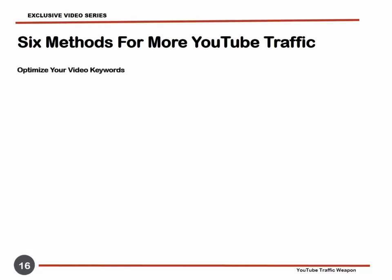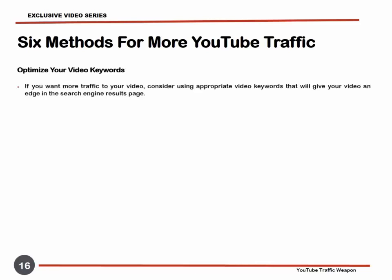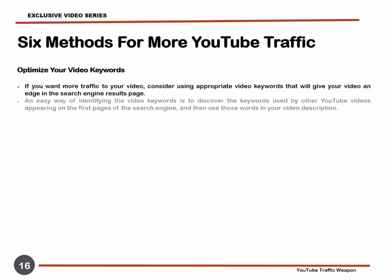Optimize Your Video Keywords. Although it pays to have a good YouTube ranking, it is more rewarding if the classification extends to Google and search engine searches. It is obvious that many websites' traffic comes from search engines like Google, which create page rankings dependent mainly on the keywords used. Therefore, if you want more traffic to your video, consider using appropriate video keywords that will give your video an edge in the search engine result page. An easy way of identifying the video keywords is to discover the keywords used by other YouTube videos appearing on the first pages of the search engine and then use those words in your video description.